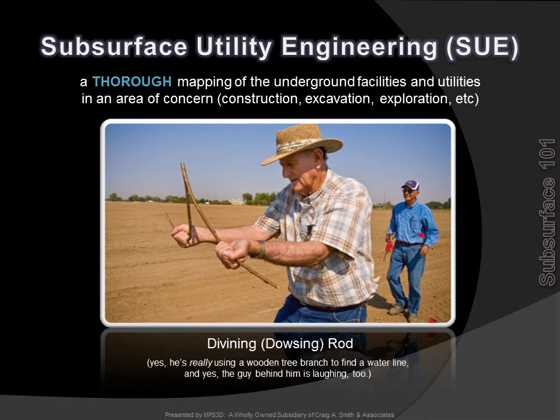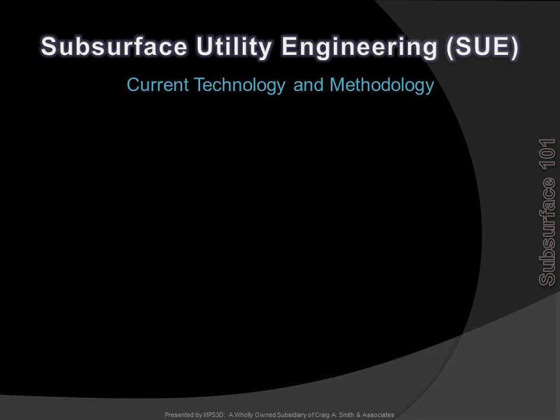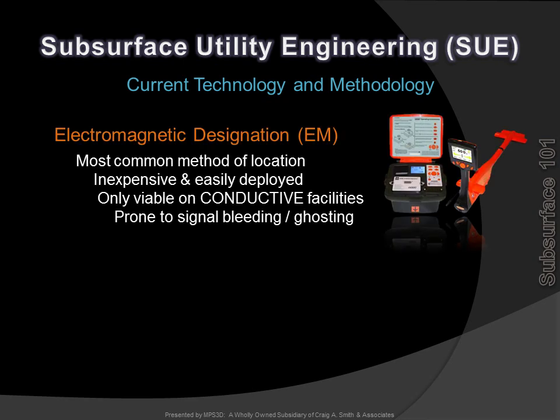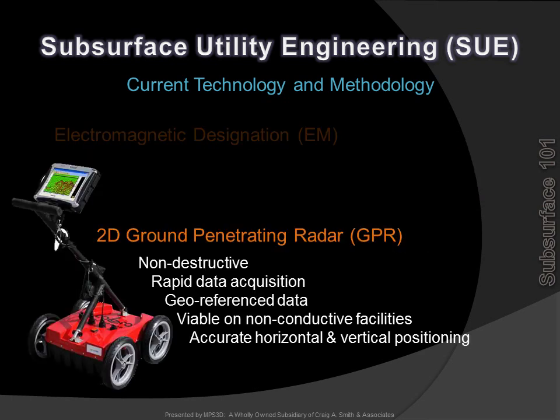The divining rod is an example of how not to accurately locate facilities. Current technologies for locating facilities are considerably more accurate than the dowsing rod. EM, or Electromagnetic designation, is the most common technology, but requires the target facility to be conductive or have a tracer wire, like steel or ductile iron. 2D Ground Penetrating Radar is a more advanced technology — it is rapid, non-destructive, and works on conductive and non-conductive facilities such as PVC, HDPE, asbestos, cement, or clay.